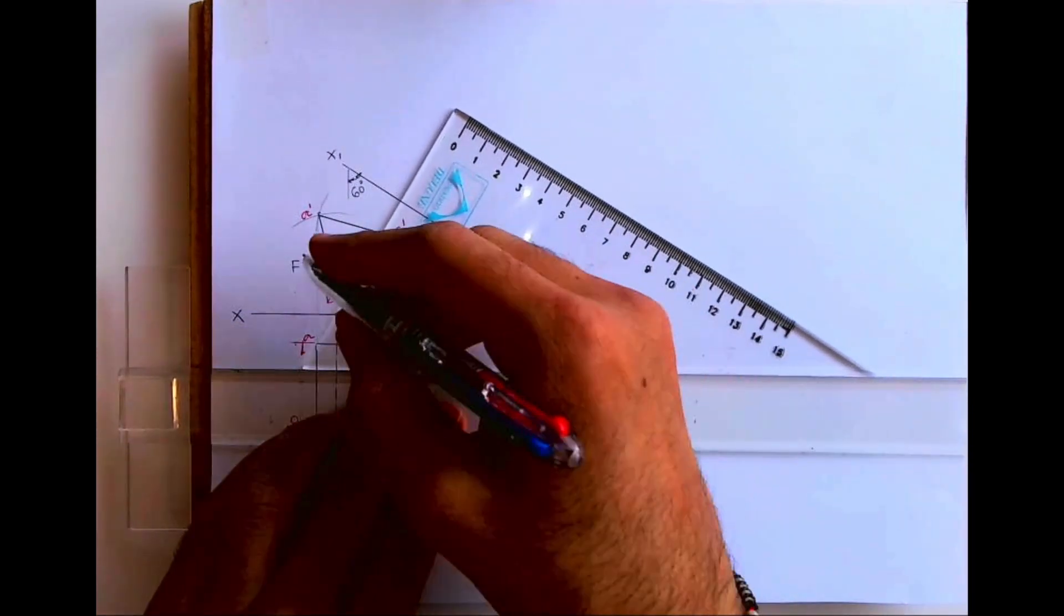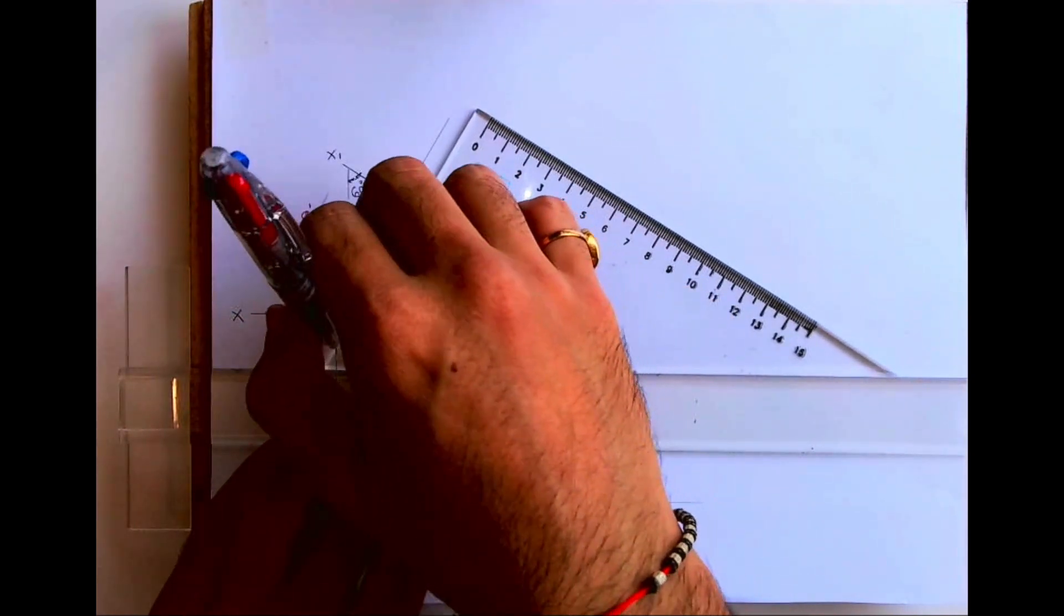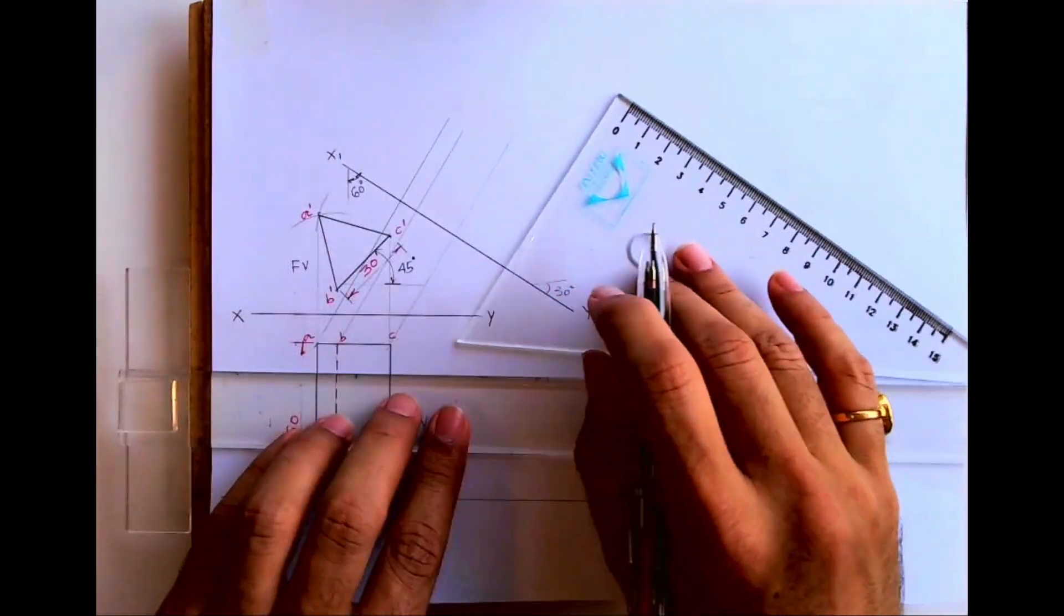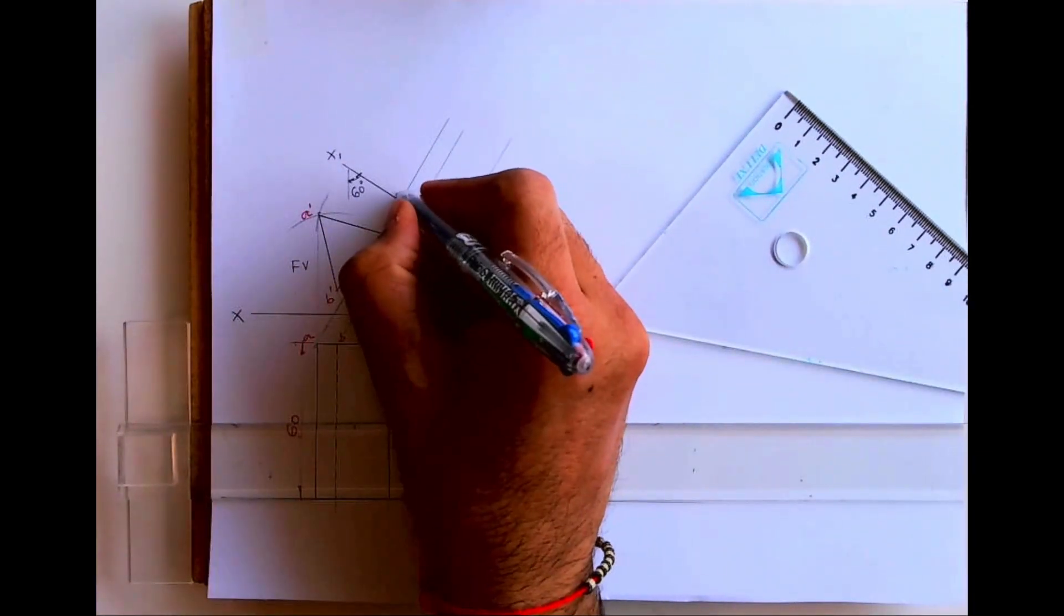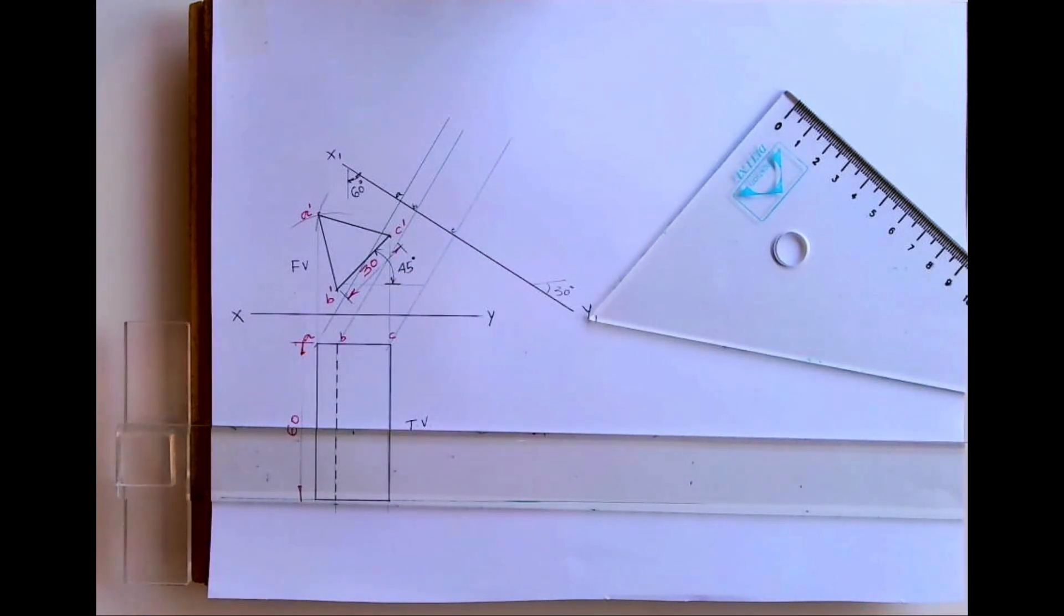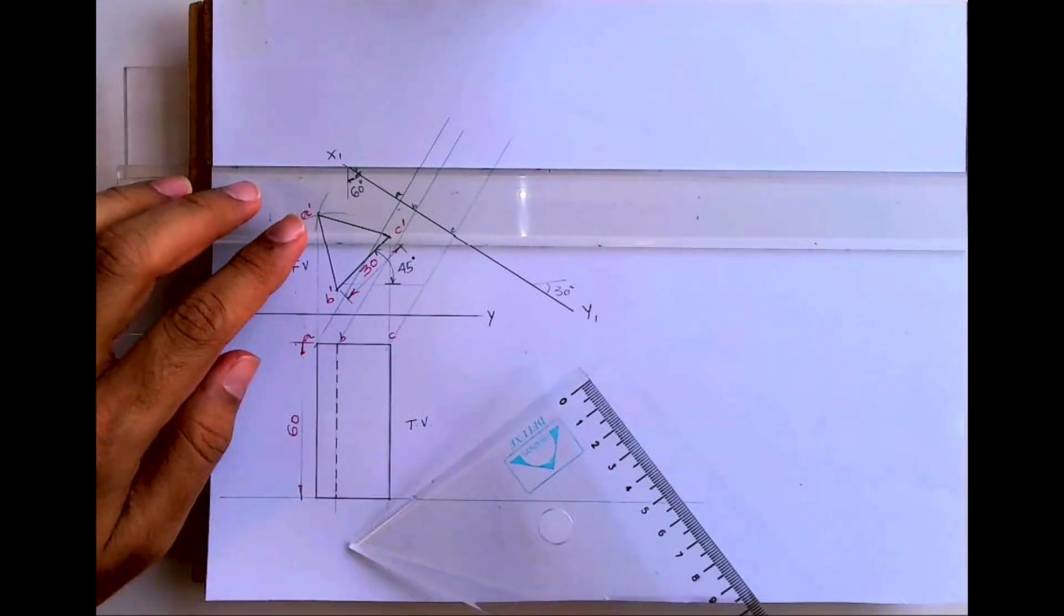First I will draw a line from here which will be perpendicular to the 30 degree line, X1 Y1. This is ABC. Same way I will project points from down also.